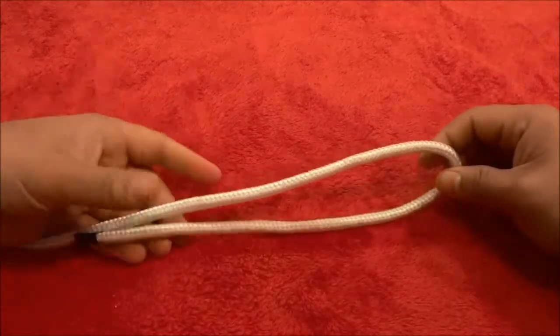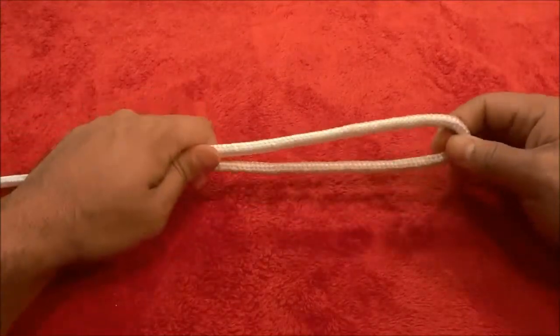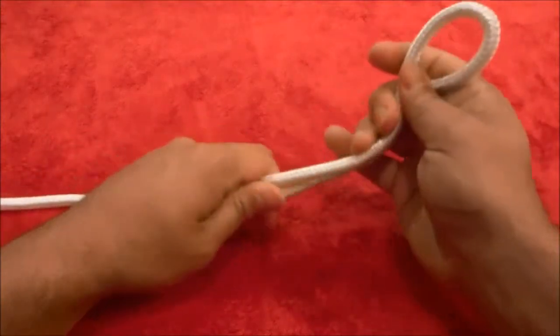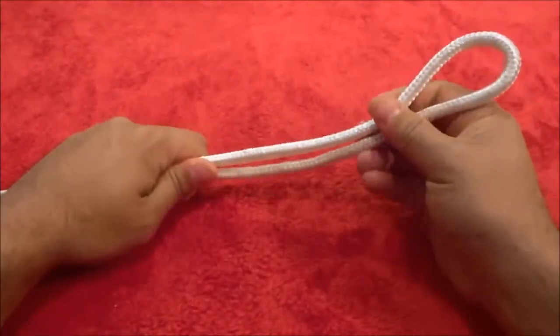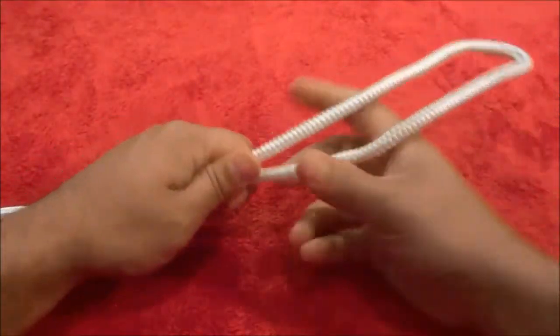Then I'm going to use my left hand to hold these two pieces of rope together, and I'm going to use my right hand to create a very simple overhand knot with the bite just like this.